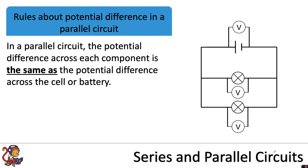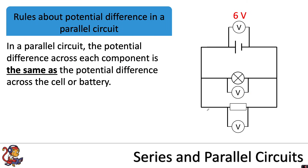In a parallel circuit, the potential difference across each component is the same as the potential difference across the cell or battery. So if you had 6 volts across the cell, you would have 6 volts in the first branch and 6 volts in the second branch. This would be the same even if you change the component — 6 volts at the top would mean 6 volts across the lamp and 6 volts across the resistor.